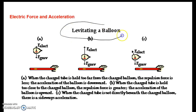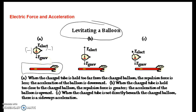We talked about levitating paper bits — now let's talk about levitating a balloon. We have a balloon that's negatively charged; we've rubbed it with fur to make it negative. Then we get a plastic golf tube and rub it to make it negative as well. Negative charges repel, so the balloon wants to go up while the tube wants to go down, but we're holding the tube with our hands. The electrical force can be balanced by gravity.